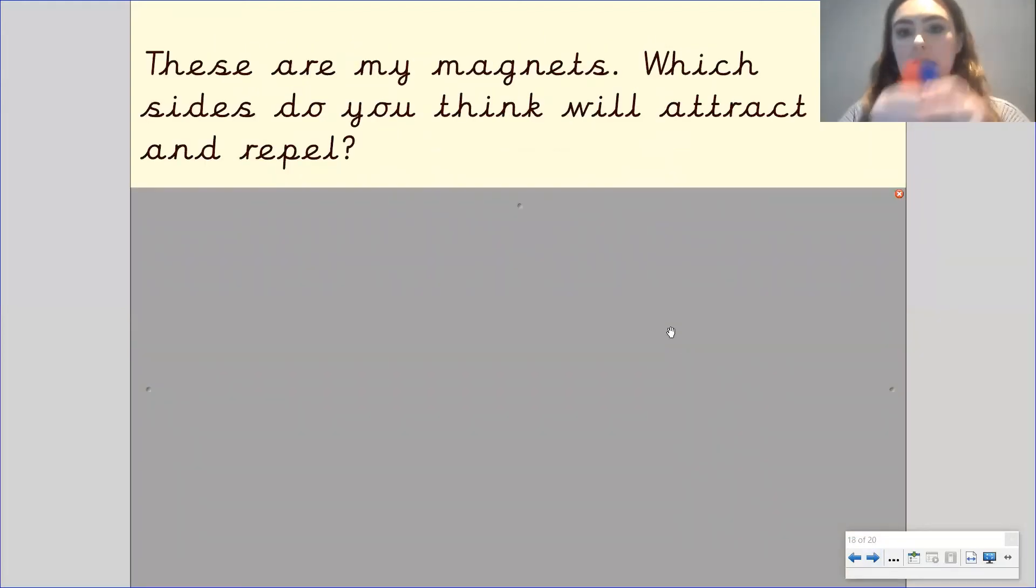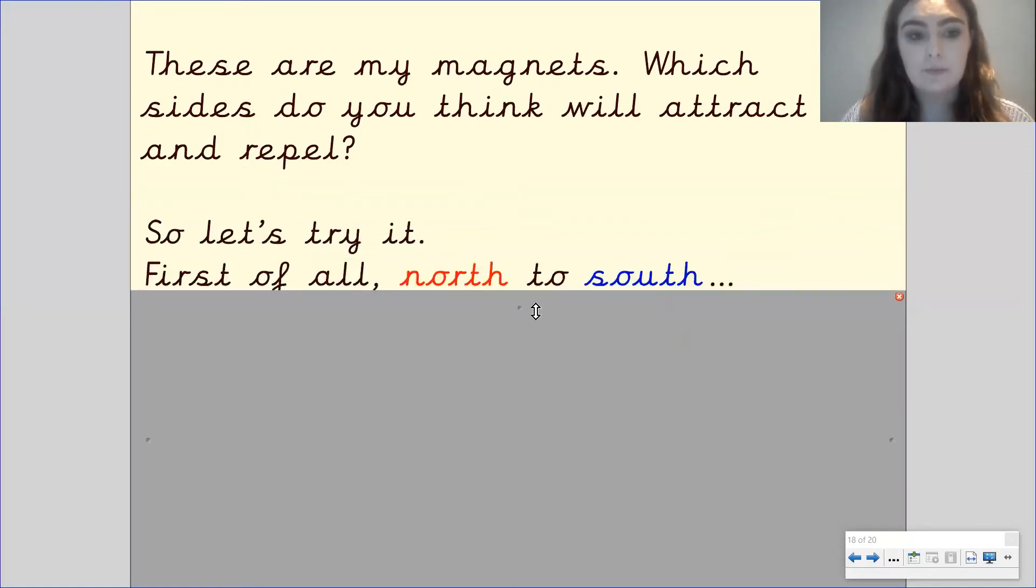So these are my magnets and I want you to have a think using what we've just learned. Which sides attract each other and which sides repel each other? Pause the video to have a think. Okay let's have a go. So we'll try it out. Let's do north to south first and see if we are correct. So there's my north, there's my south. What do you think will happen? Will it attract or repel? Have a think.